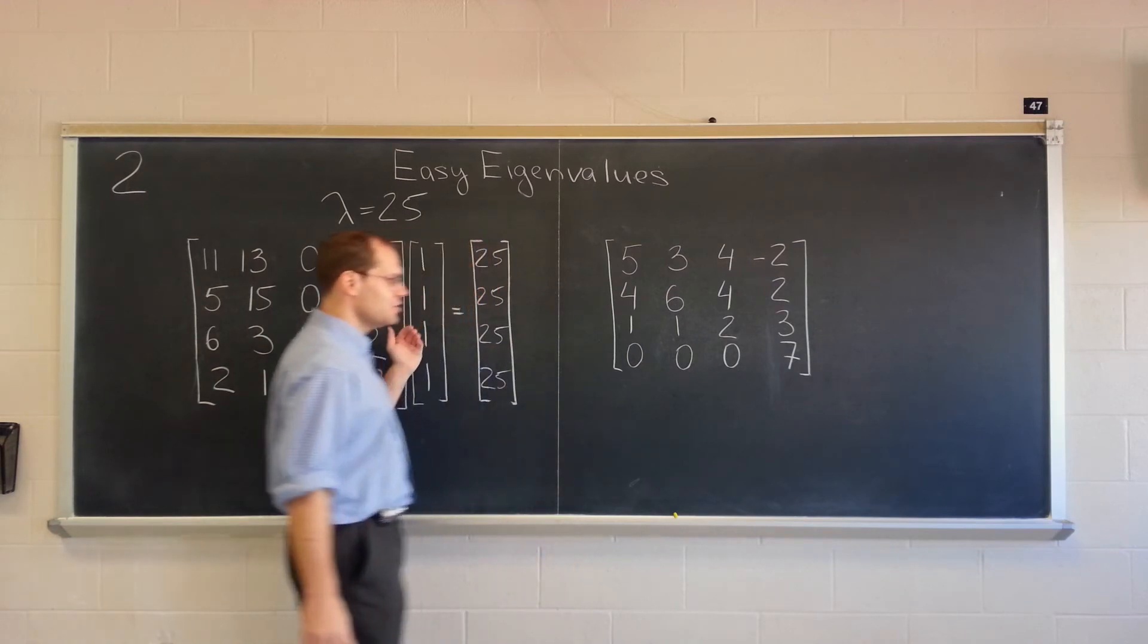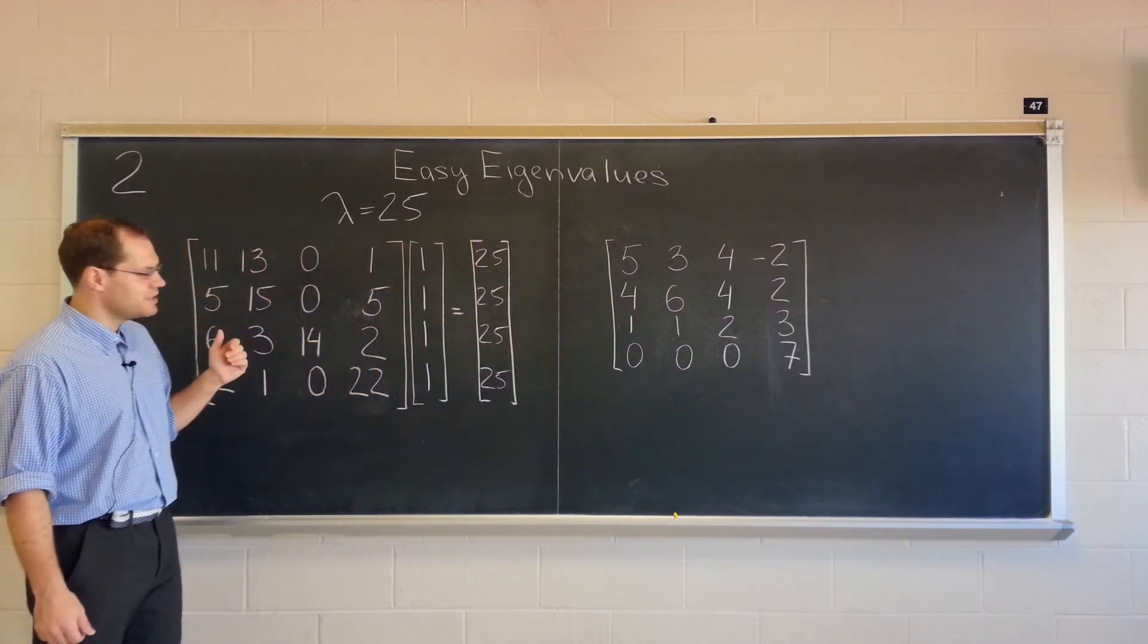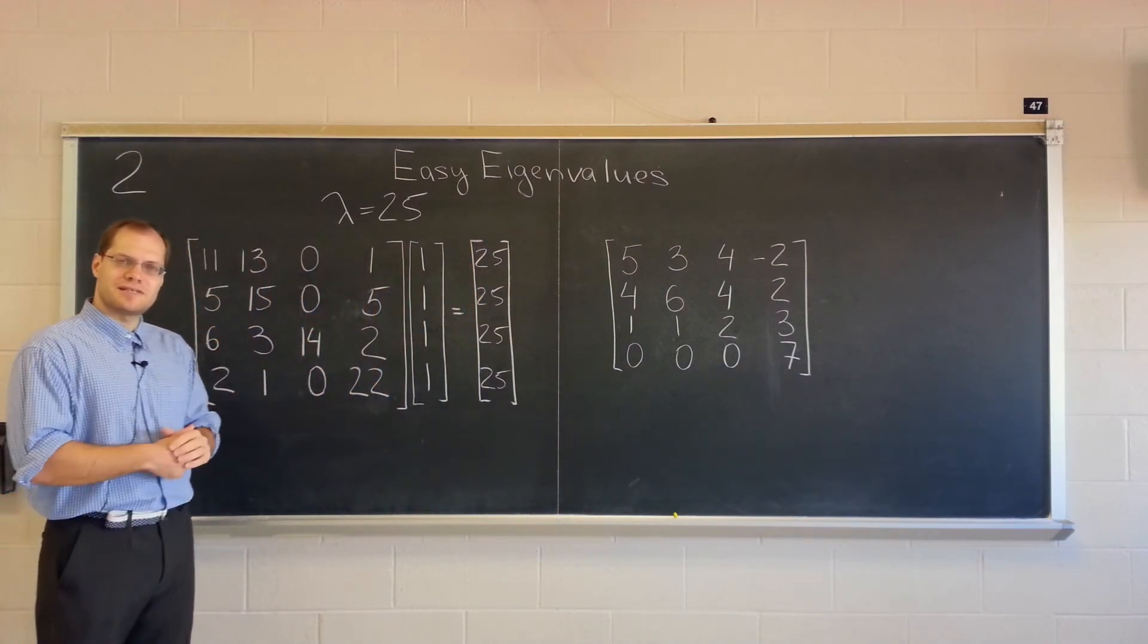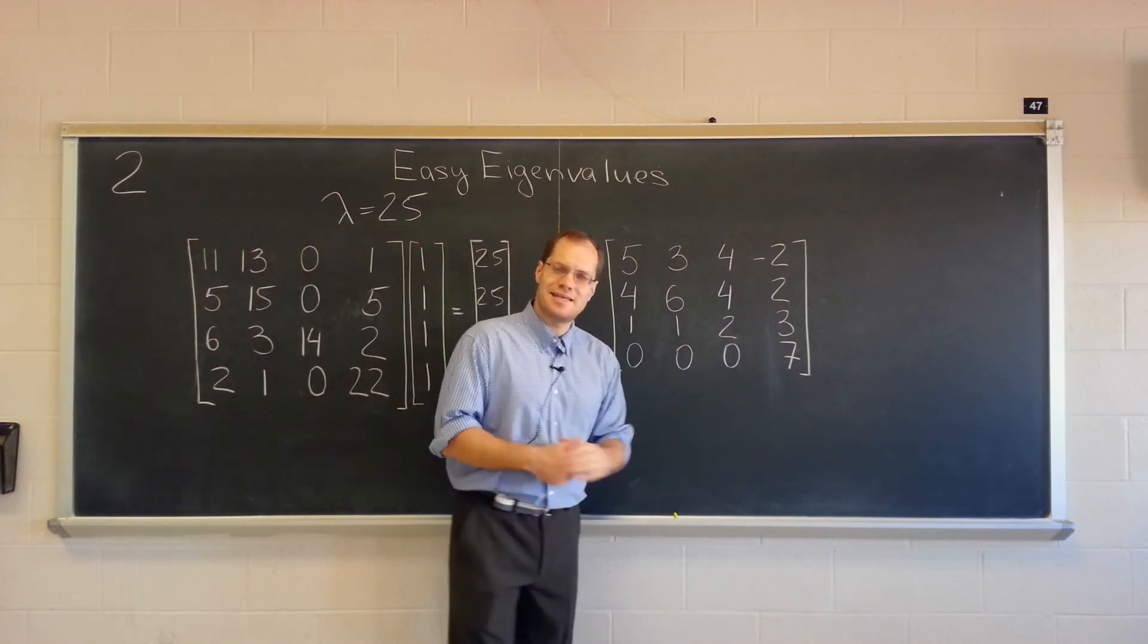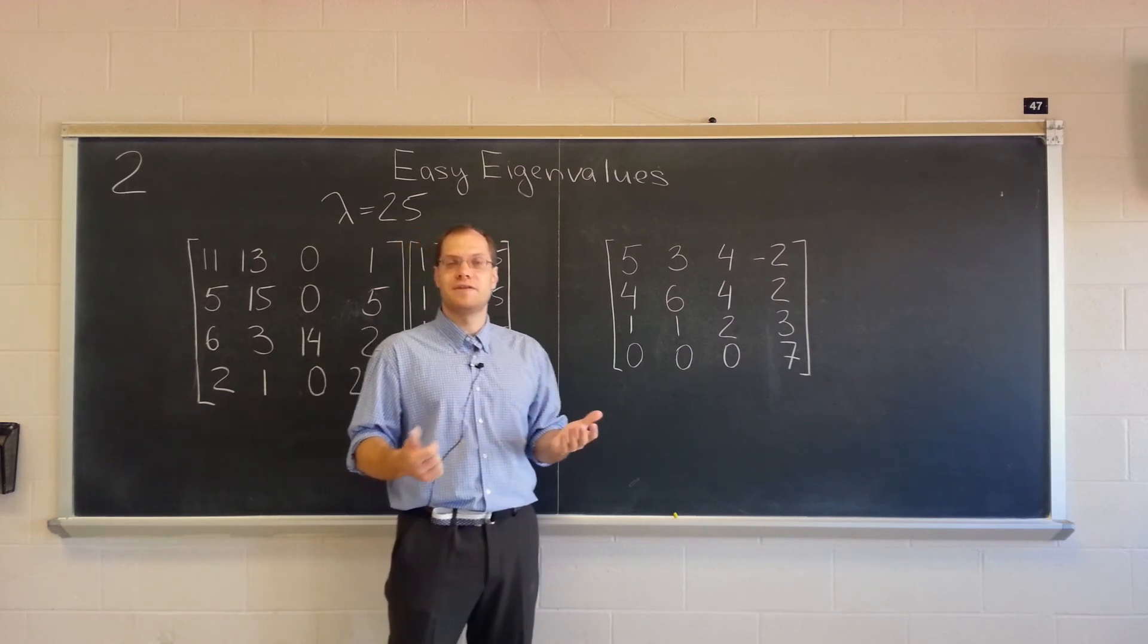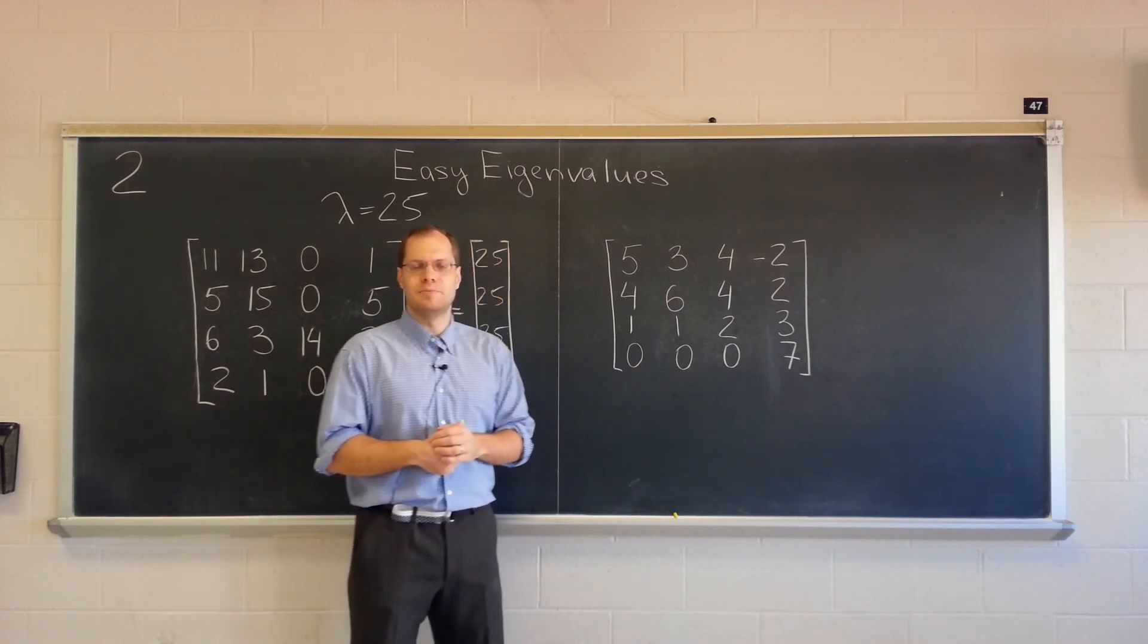So in this matrix, you know two eigenvalues—14 and 25—and both of their eigenvectors. And in this matrix, you know two eigenvalues—7 and 10—but neither of the eigenvectors without doing a little bit more work.